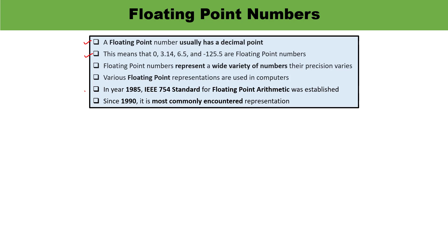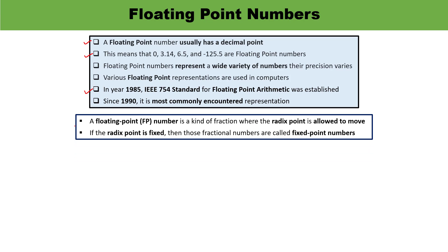In 1985, the IEEE 754 standard for floating point arithmetic was established, and from 1990 it is the most commonly used representation. A floating point number is a kind of fraction where the radix point is allowed to move, meaning the decimal point can move. If the decimal point is fixed, those fractional numbers are known as fixed point numbers.